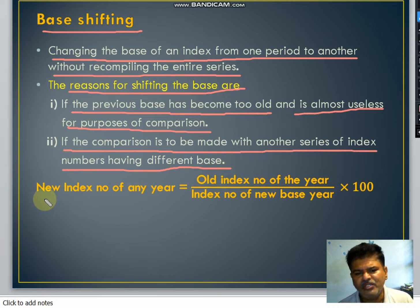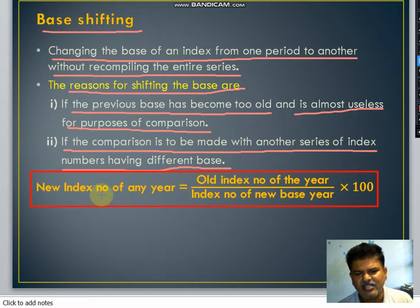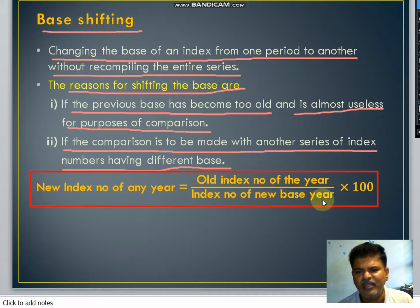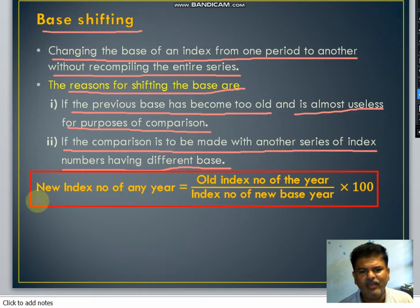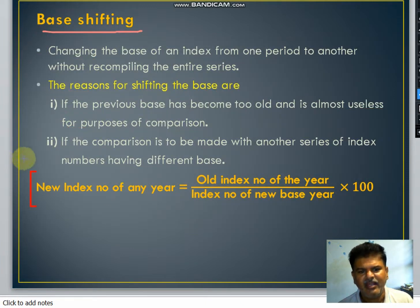How do we shift the base? The formula for shifting the base is: New index number of any year = (Old index number of the year ÷ Index number of the new base year) × 100. This gives us the new index number of any year. We will see an example of how we can shift the base, and this is very important in the case of index numbers.